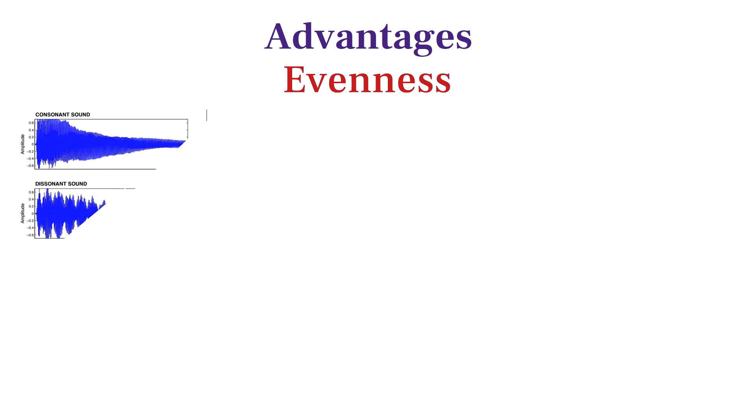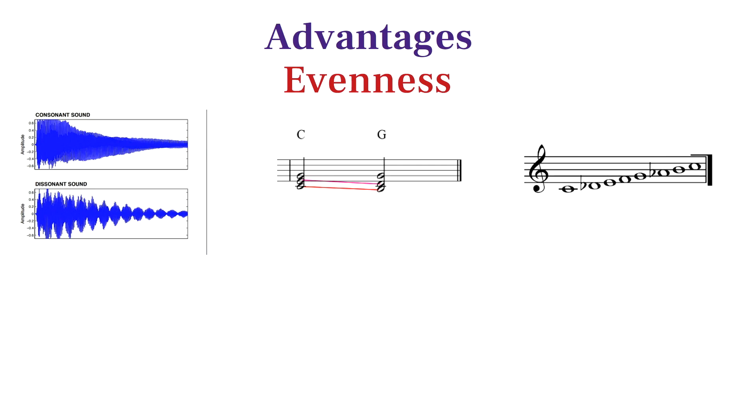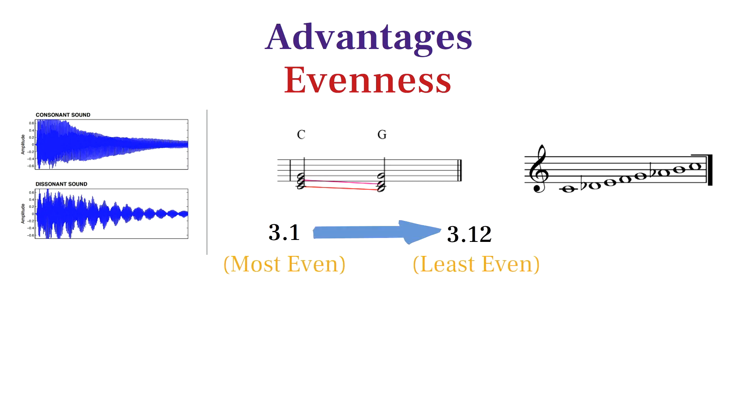We chose to order our chart by evenness because it's a property that's highly correlated with a host of other musically important features, such as consonance, parsimonious voice leading, and regularity as a scale. Ordering the chart like this also imbues our rank number with valuable information about where that set lies on a spectrum of evenness.